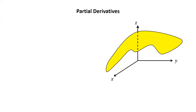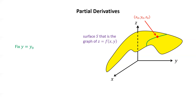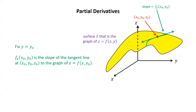Let's try to understand what's going on with these partial derivatives geometrically. We start with a surface S that is the graph of z equals f of xy, and take a point on that surface, x zero, y zero, z zero. If we fix y to be equal to y zero — in other words, we're looking at all points on that surface where y equals a fixed value y zero — we get a curve. The slope of the tangent line to that curve at the point x zero, y zero, z zero is f sub x at x zero, y zero. This is just a function of the single variable x because y has been replaced by a specific value.